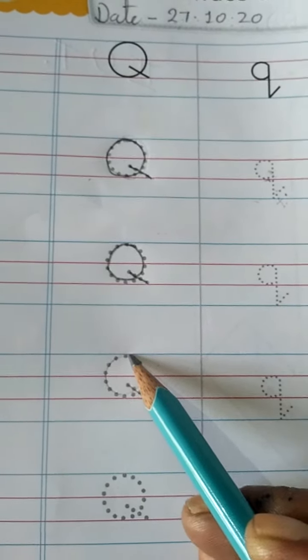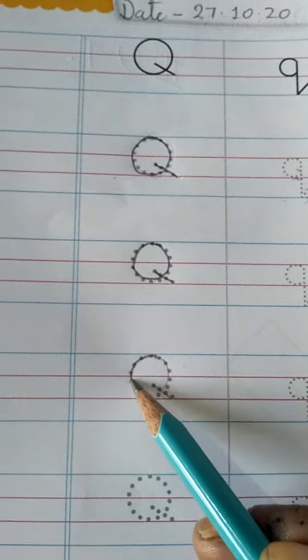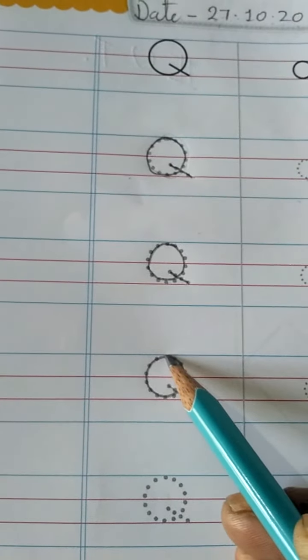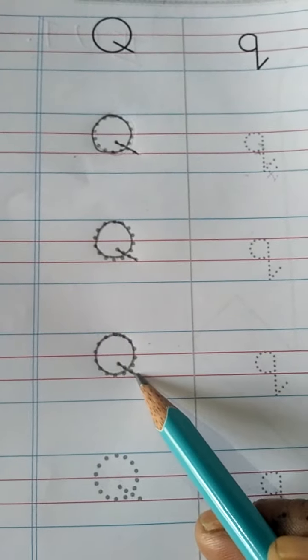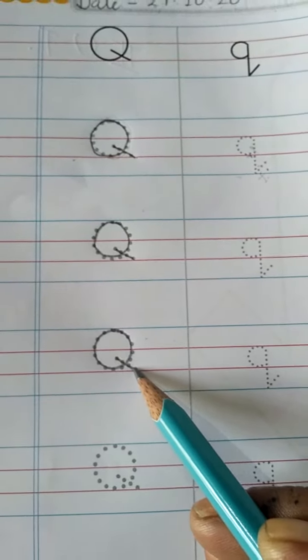Start from the top, draw a circle, small slanting line to touch the bottom. This is capital letter Q.